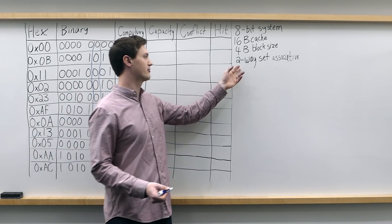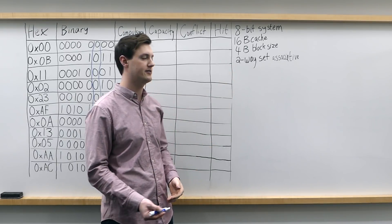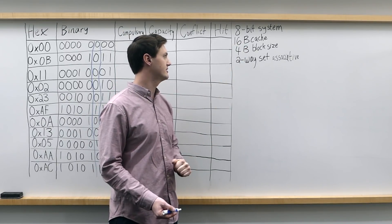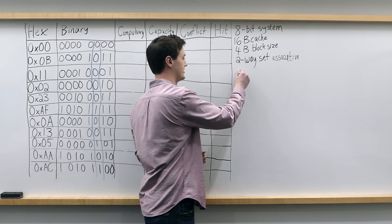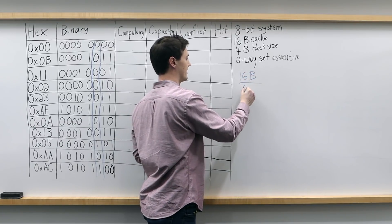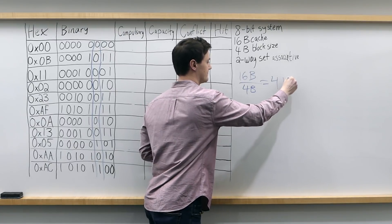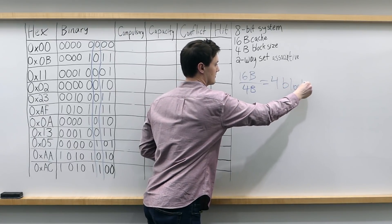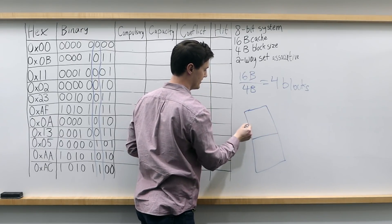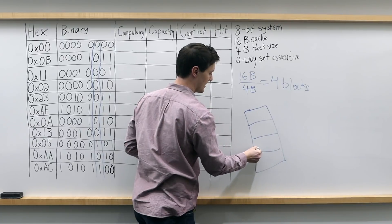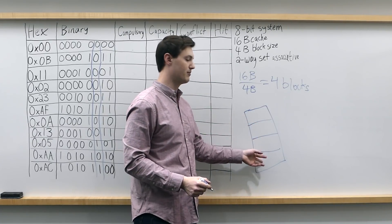So let's real quickly break down the final cache that we're looking at here, just so we have a good idea of what we're working with. We have a 16-byte cache and a 4-byte block size. So we know from that information, we have 16 bytes in our cache with 4-byte blocks, and we'll have 4 blocks total. If we just draw that out, we can draw our little rectangle cache here — we have 4 blocks, and each of these blocks would represent 4 bytes in memory.